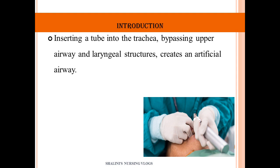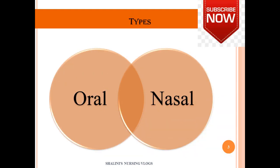So what is endotracheal intubation exactly? It is inserting a tube into the trachea which bypasses the upper airway structures and the laryngeal structures and creates an artificial airway. There are two types in which you can intubate a patient: either oral intubation, which is the commonest type, or nasal intubation.